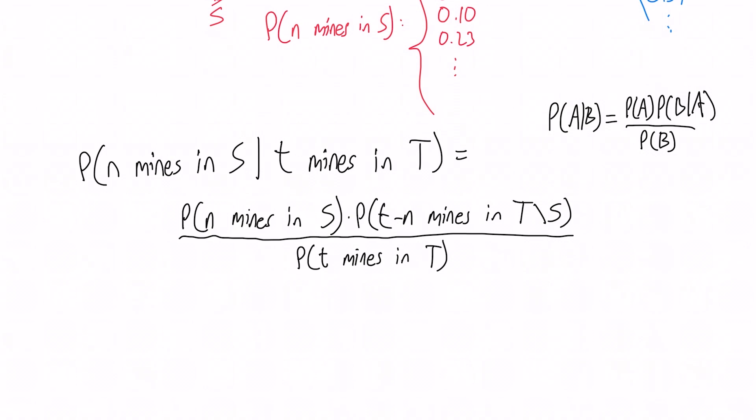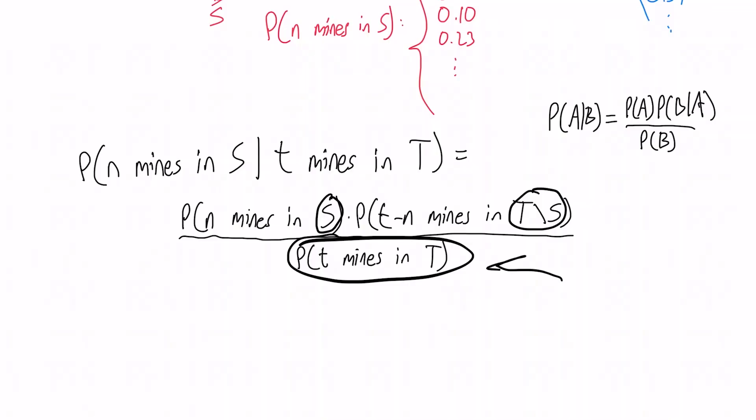So we have to compute a distribution on S. We have to compute a distribution on T without S. And we also have a constant here across all of the queries, which is the probability, the overall probability that we have T mines total in T, which we already know has occurred. So this is the total problem space. And then this divides up the problem space into each of the things that we care about there. OK, so that is the probability, that is the math part of this solution.